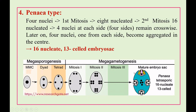The mature embryo sac in plumbago-type has 4 polar nuclei in the central cell — unlike the typical 2 polar nuclei seen in other types. This means the endosperm after fertilization will be 5N in nature, consisting of 4 polar nuclei plus 1 nucleus from the pollen grain. At the micropylar end, 2 synergids and 1 egg cell develop, and 9 nuclei at the chalazal end act as antipodals.